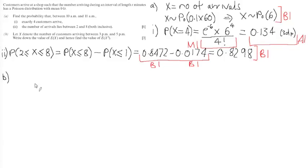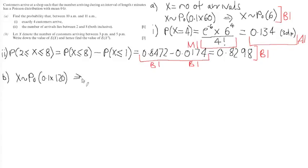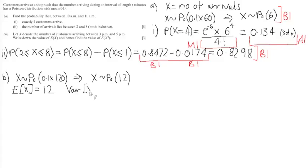Finally, part B. X denotes the number of customers arriving between 3pm and 5pm. We need to write down the value of E(X) and find E(X²). The number of minutes from 3pm to 5pm is 120, so the mean is 0.1 times 120, giving X a Poisson distribution with mean 12. In the Poisson distribution, we need to remember that the variance of X is also equal to the mean, which is 12.